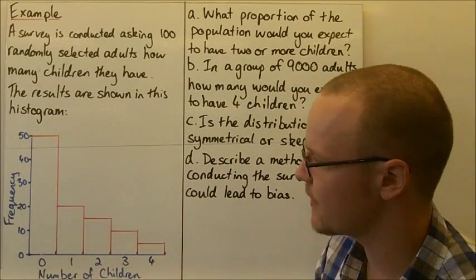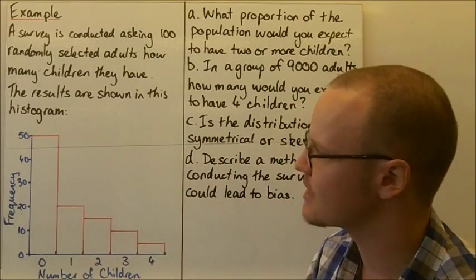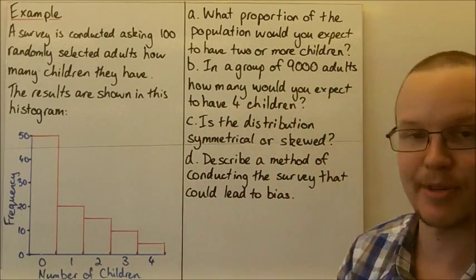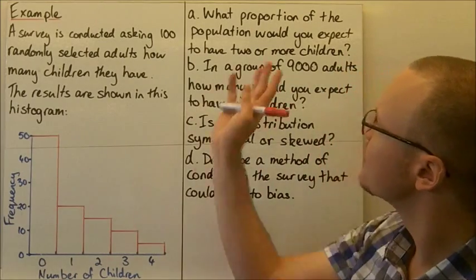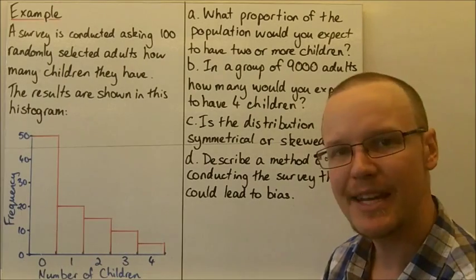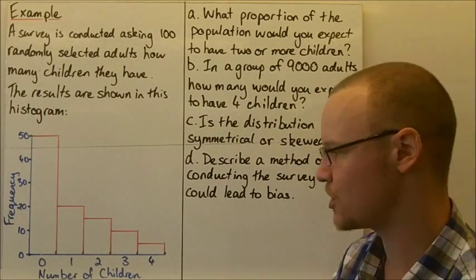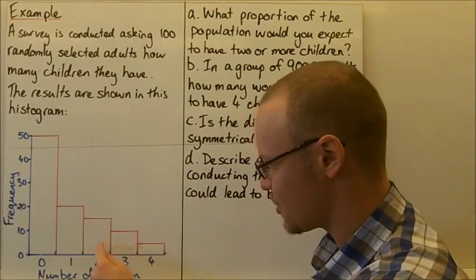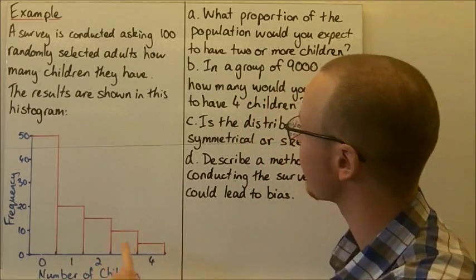So we can see here very easily the patterns in the data. Let's have a look at some of the questions that we need to look at. So what proportion of the population would you expect to have two or more children, so that's two or more, so that's 2, 3, 4. We're looking at that whole category there.